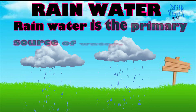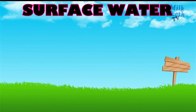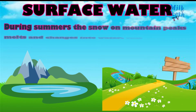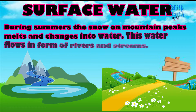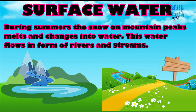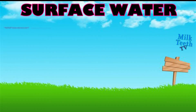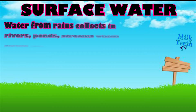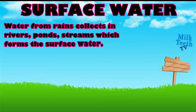Rainwater is the primary source of water. During summers, the snow on mountain peaks melts and changes into water. This water flows in forms of rivers and streams to make the surface water. Water from rains also collects in rivers, ponds, and streams, which forms the surface water.